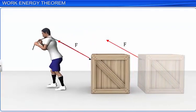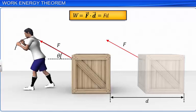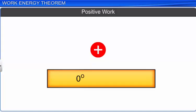Using the dot product, we can measure the work done as the dot product of the force and displacement, which equals FD cosθ. However, the work done can be positive, negative, or zero depending on the value of the angle θ between the force and the displacement. The work done by a force is positive when the angle between force and displacement is acute, that is, less than 90 degrees.